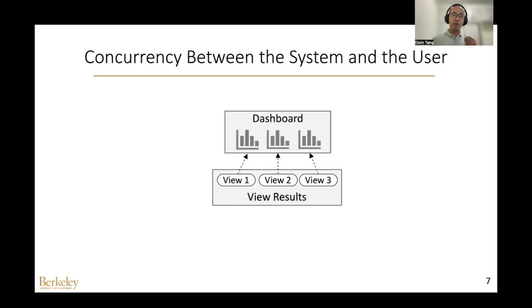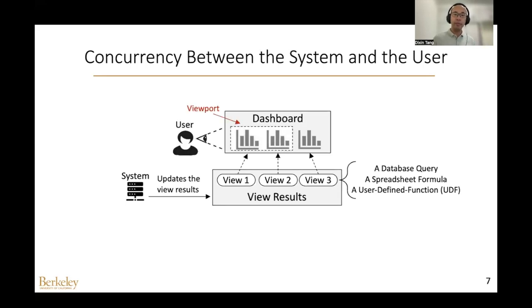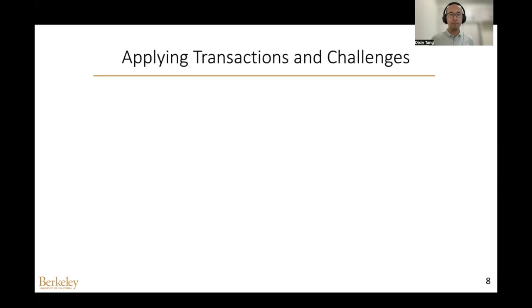To build this panorama, we first represent the programs for computing visual results as views, where each view could be a database query, a spreadsheet formula, or a UDF. Then we model the refresh problem as a concurrency problem, where the system is updating the view results and the user is concurrently reading the view results by looking at the screen. The rectangular area that the user is looking at is called the viewport, and the user can also modify the viewport to explore other parts of a dashboard.